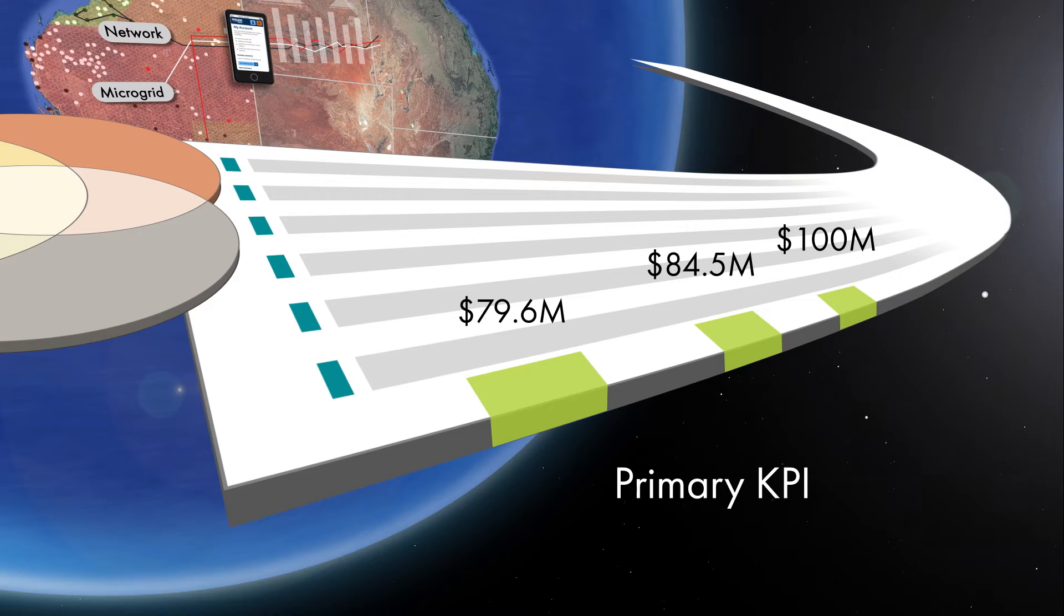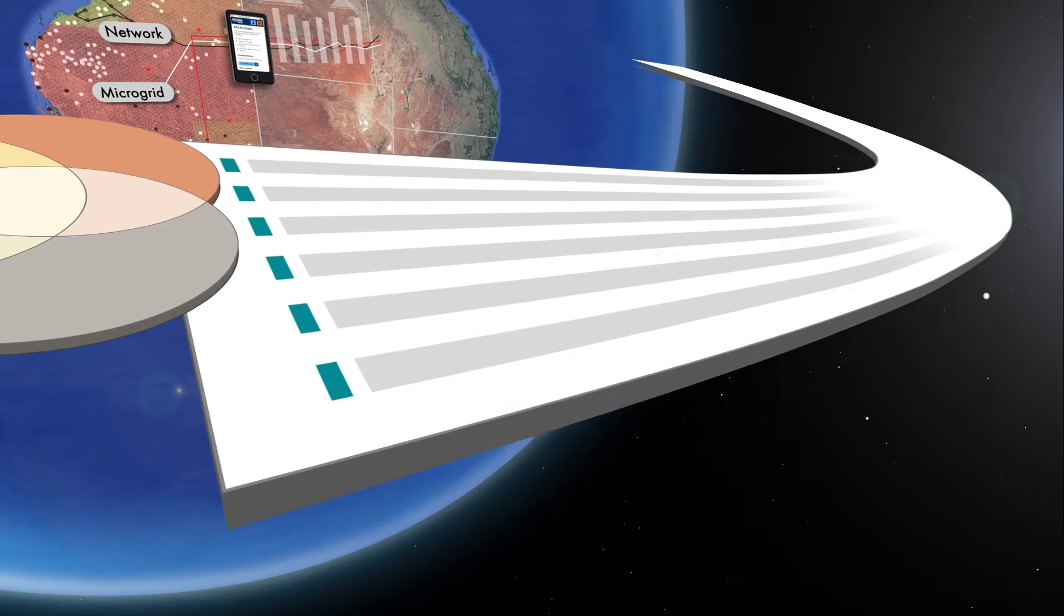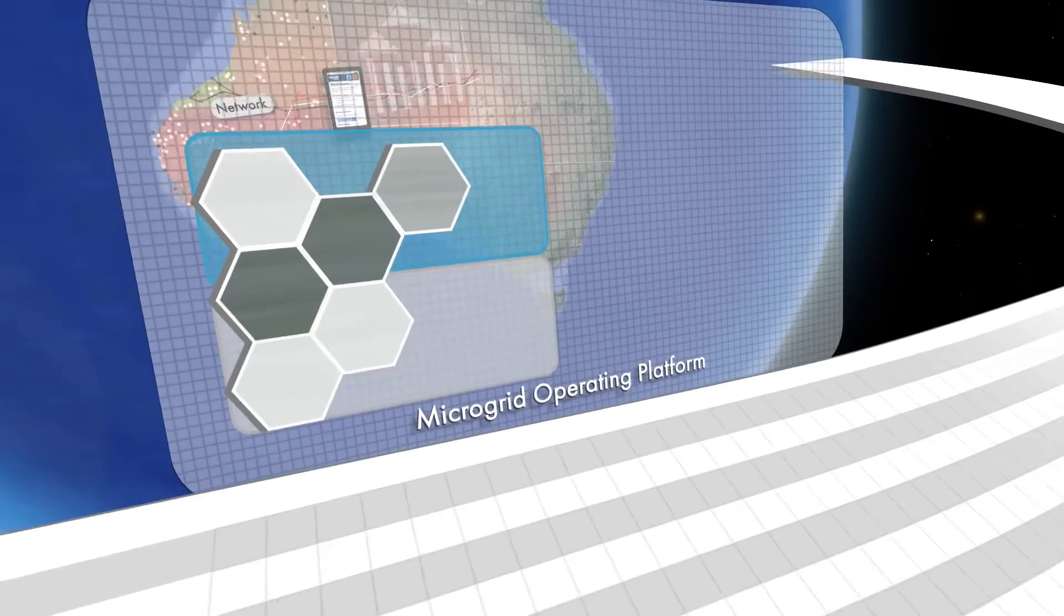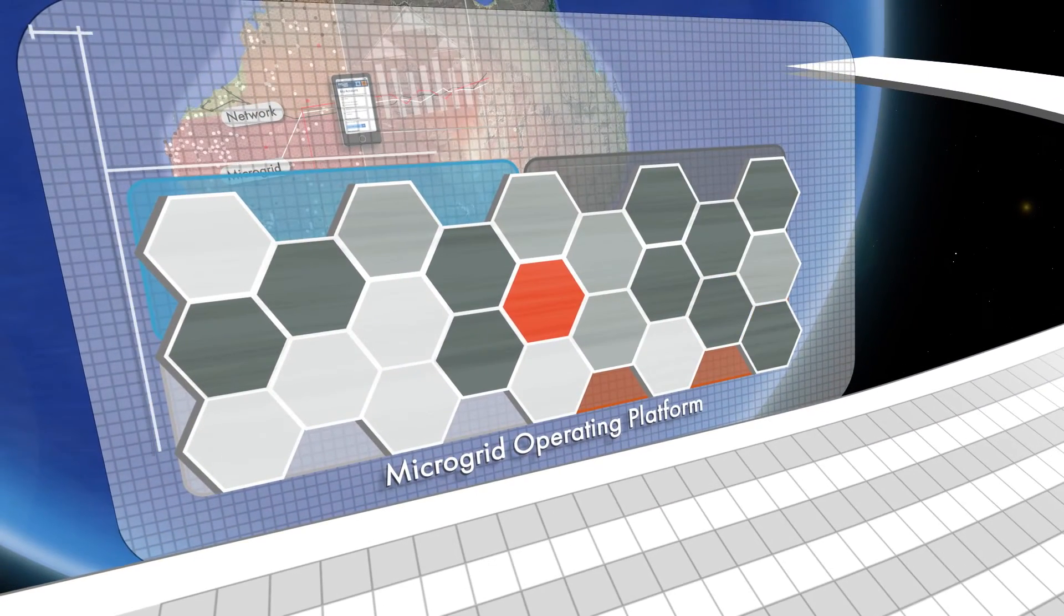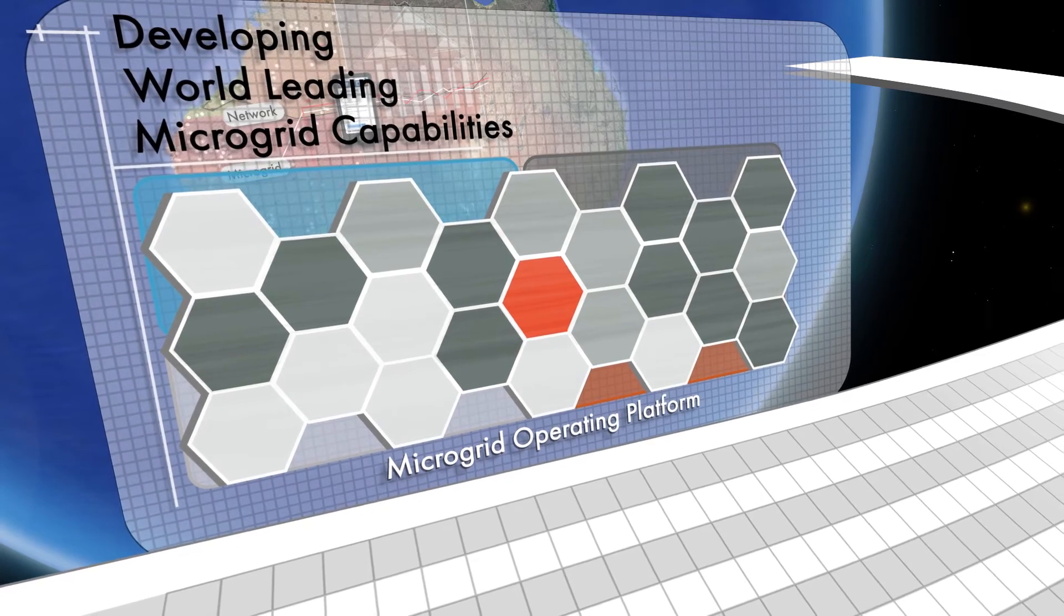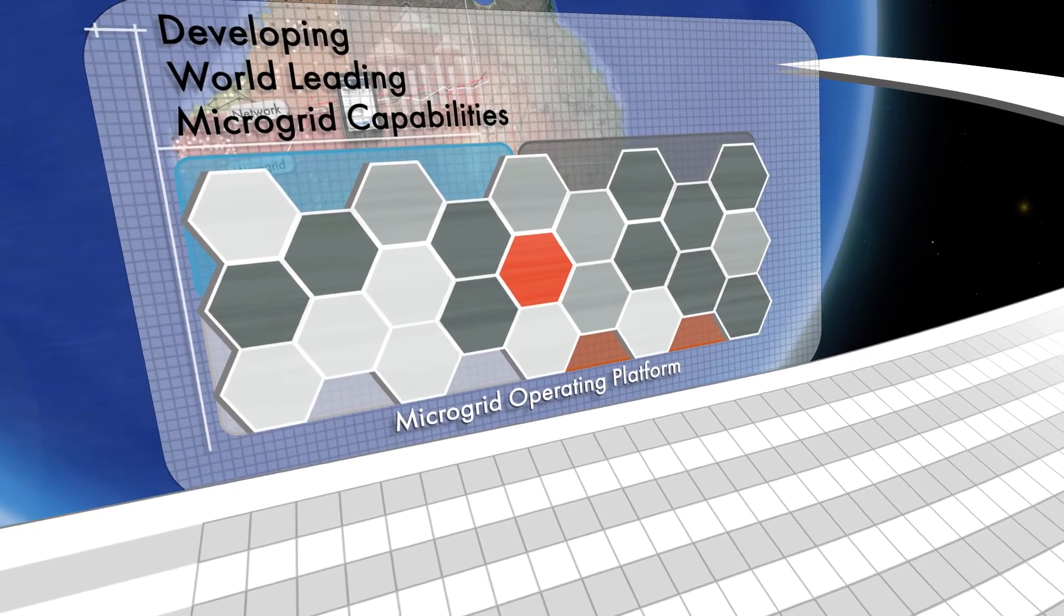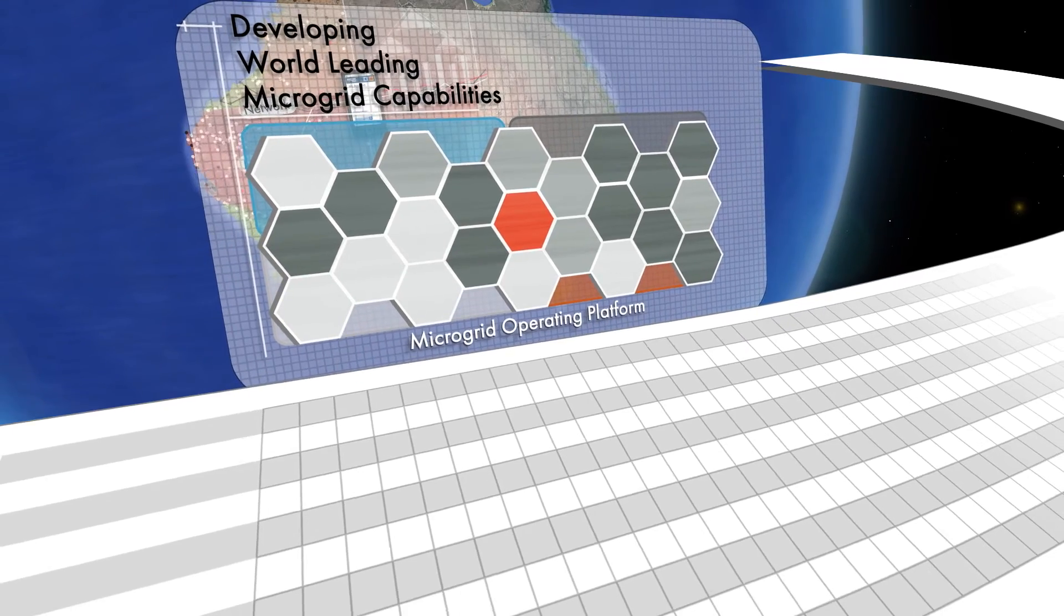Horizon Power has significant expertise and experience in managing remote microgrids. This is our microgrid operating platform. We have work underway across our three horizons to enhance this platform through a number of strategic projects.